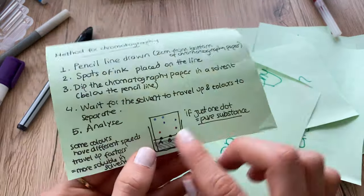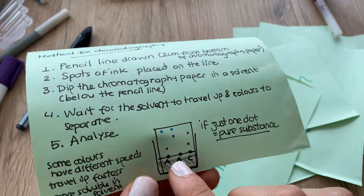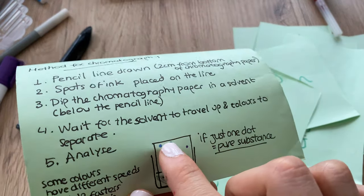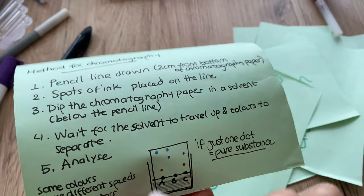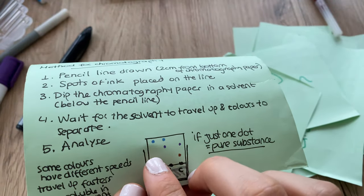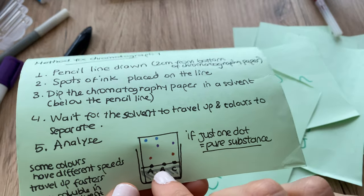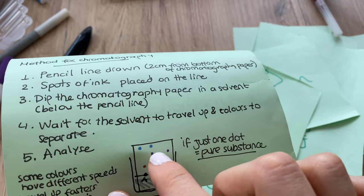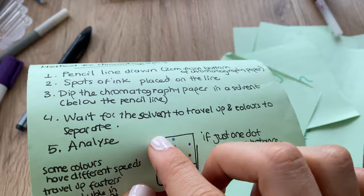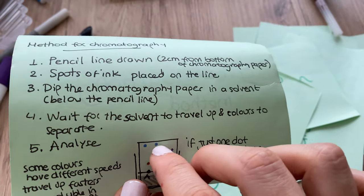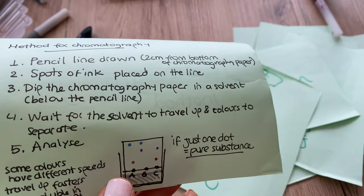And then also we can see that A and B have a similar substance in them, they have the blue one, and A and C have the brown one, and B and C have the purple one. This is because they are on the same exactly line, so this means they're the same substances.